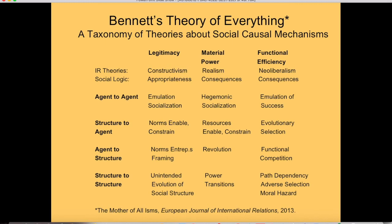So we have three columns and four rows, giving us 12 different families of theories or explanations. One thing you can do with your puzzle is ask which of these 12 theories might apply to explaining the outcome. Twelve is too many for any one research design, and you can set some aside quickly, but it's a good checklist to start with a broad list to make sure you haven't left anything out.